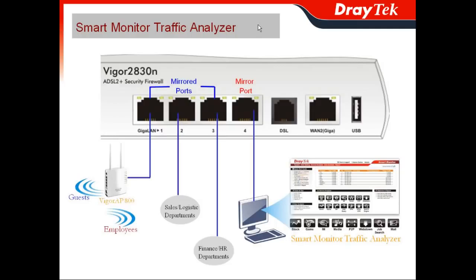For the configuration, you choose one LAN port in order to do the mirror port, which is connected to the server installed with our Smart Monitor application. You can define either LAN2, LAN3, or LAN4 as a mirror port. When you define the mirror port, the other ports can act as mirror ports so you can monitor the traffic going through those LAN ports.